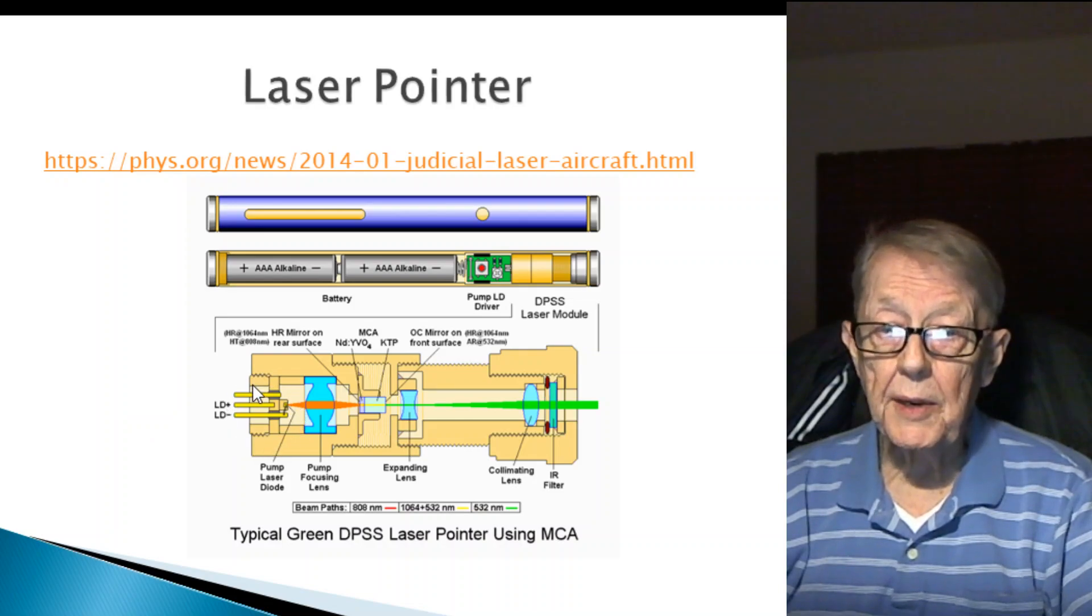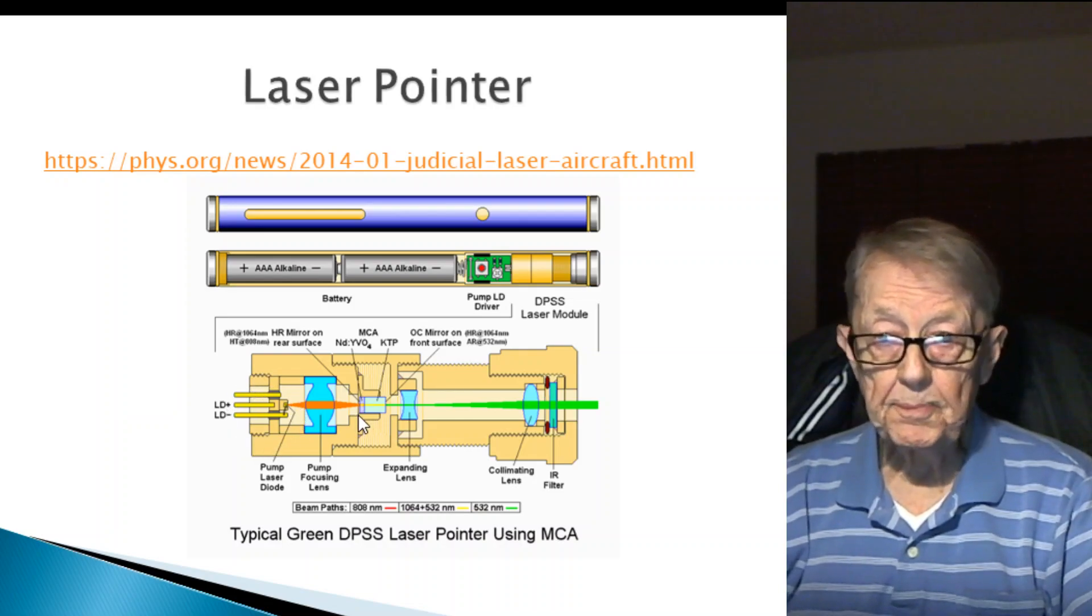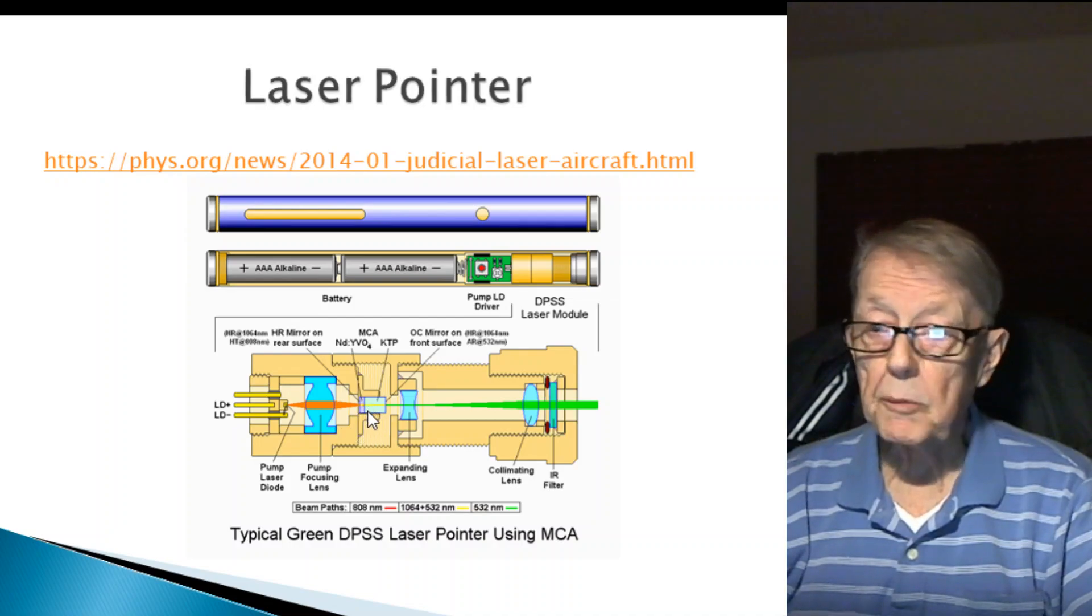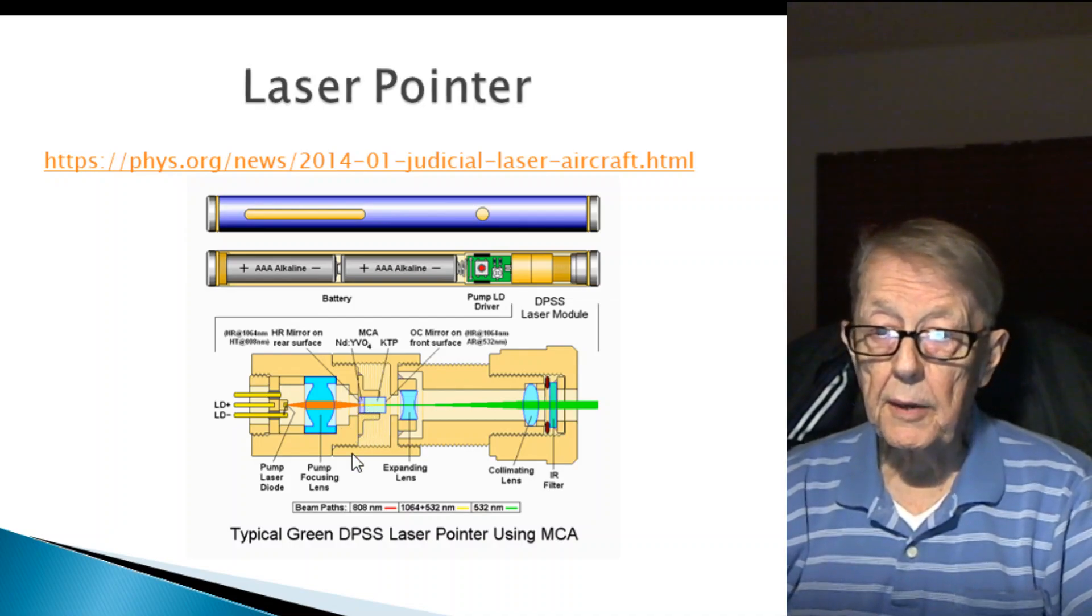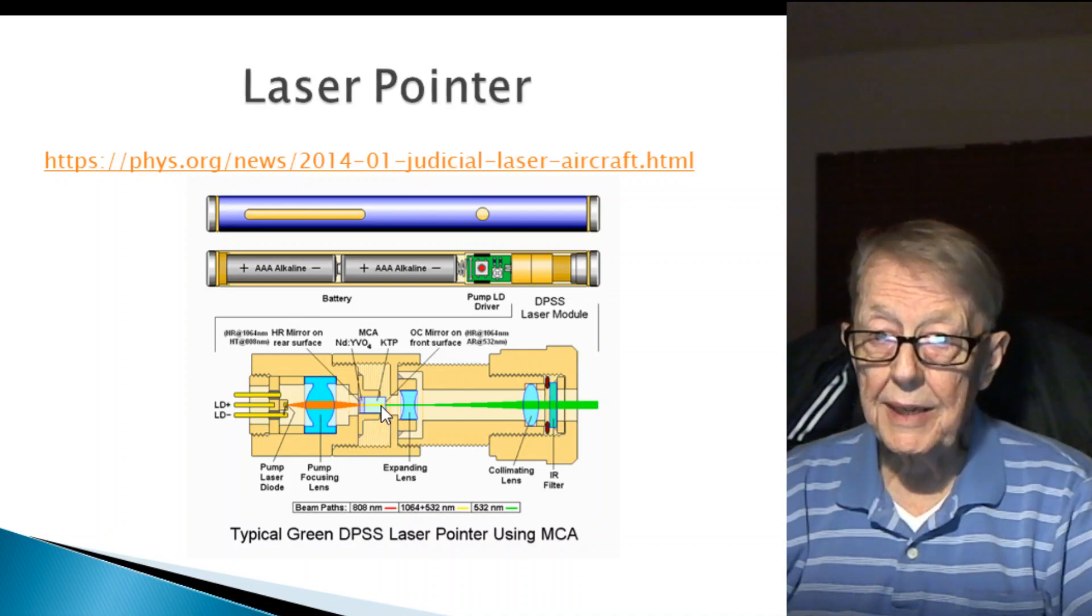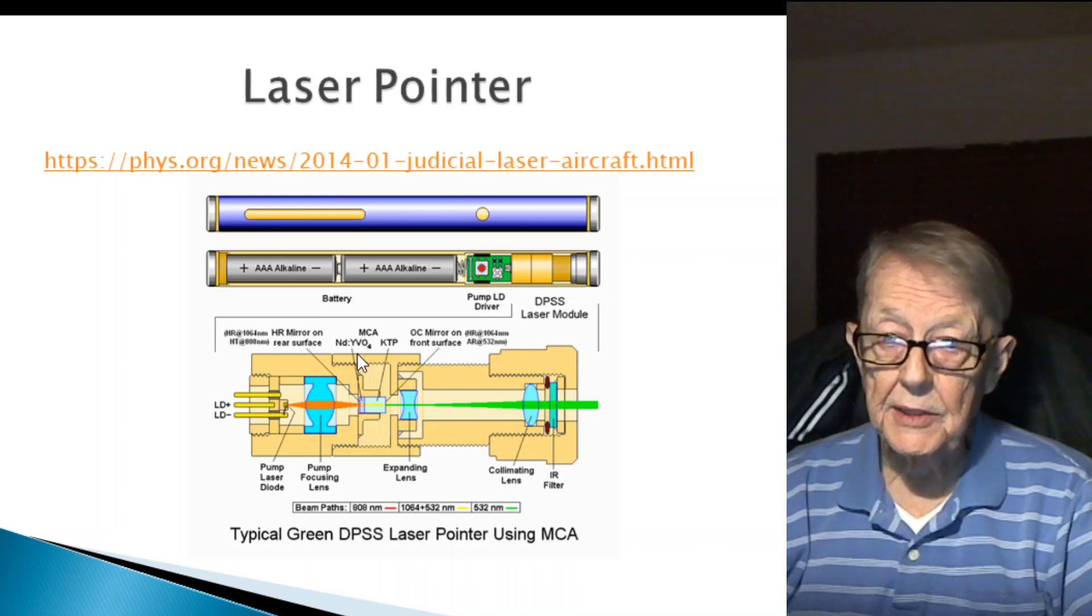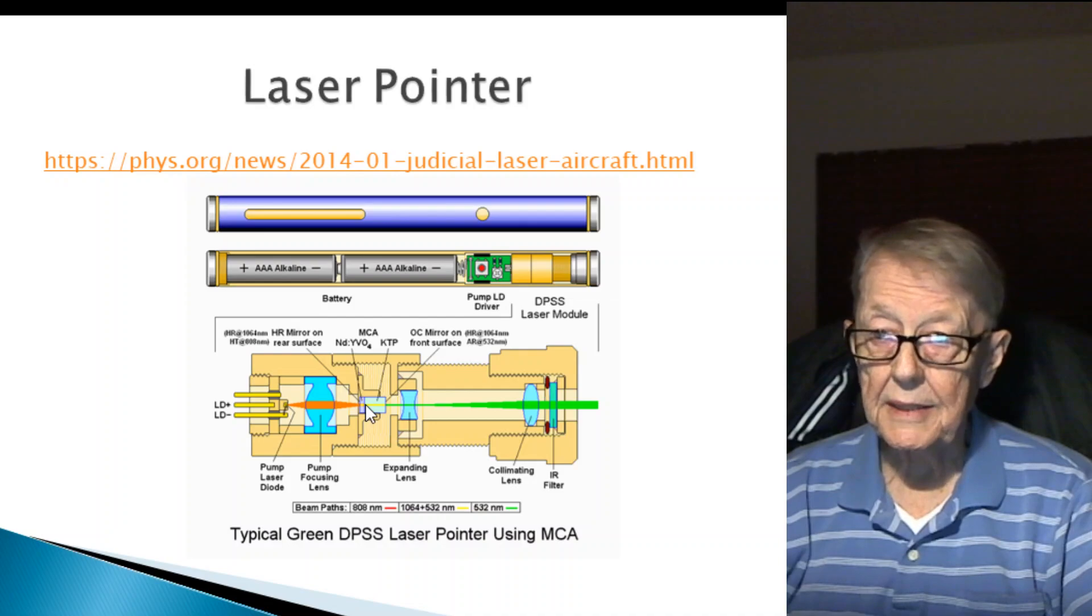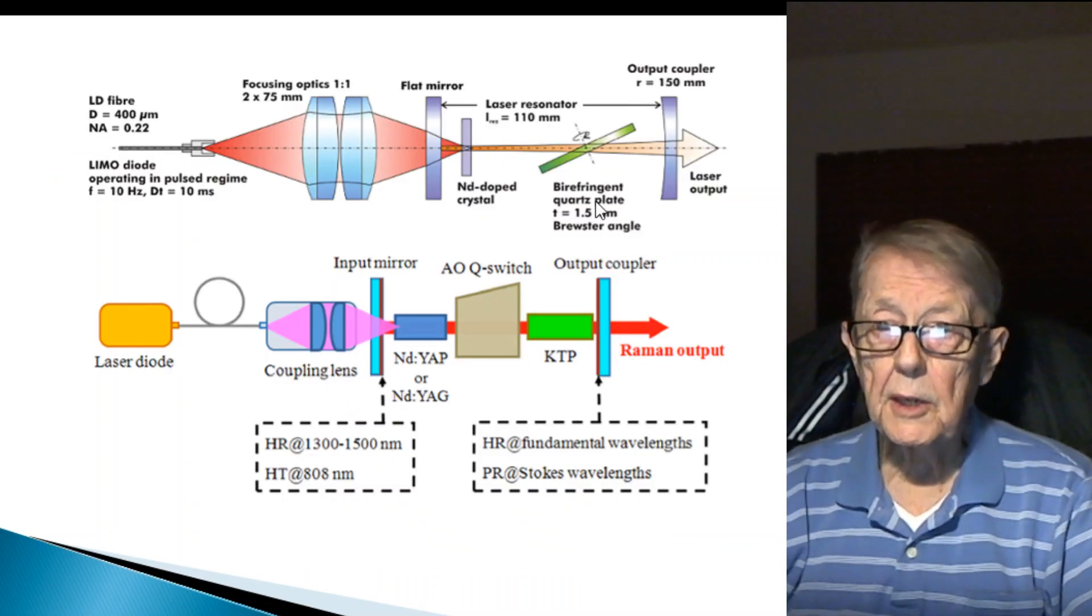Notice where the diode is. It's not between the two mirrors. Remember, in one description of stimulated emission, the diode is in between. No, in this case, there isn't a diode that's in between. There's actually a crystal inside the optical resonator.